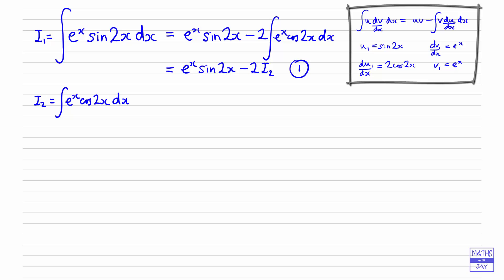Now we apply integration by parts again. It's really important here that if you chose u1 as sine 2x, you must take u2 as cos 2x. If you were to choose e^x again you would end up just showing that the integral equals itself and wouldn't get the answer. Whatever you chose first, u2 should be the same sort of thing — since we chose the trig function earlier, we choose the trig function here as well.